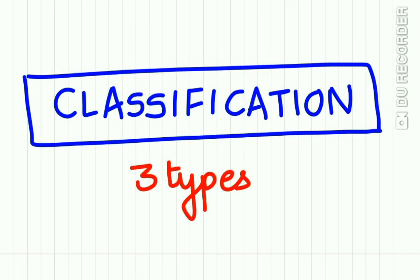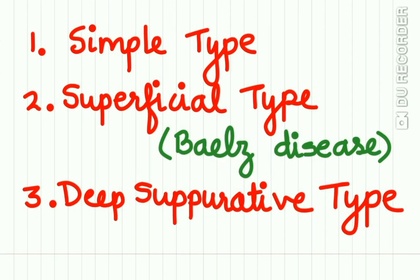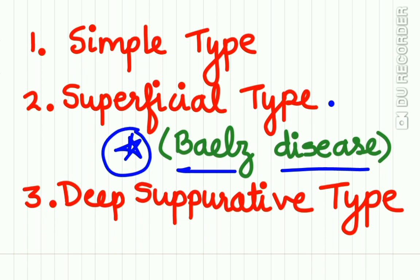The classification of Cheilitis Glandularis has three types: first is the simple type, second is the superficial type which is also called Baile's Disease — remember this name — and the third type is the deep suppurative type. Easy to remember: simple, superficial, and deep suppurative.